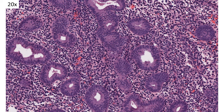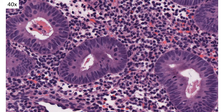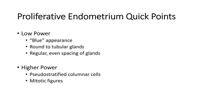At higher power, the glands are made up of columnar pseudostratified cells — tightly bunched together, which gives them a blue appearance at low power. At even higher power, you'll notice multiple mitotic figures in each of these glands. To review the features of proliferative phase endometrium: at low power, you have a blue appearance, round glands, and regular even spacing; at higher power, the glands are pseudostratified and have multiple mitotic figures.